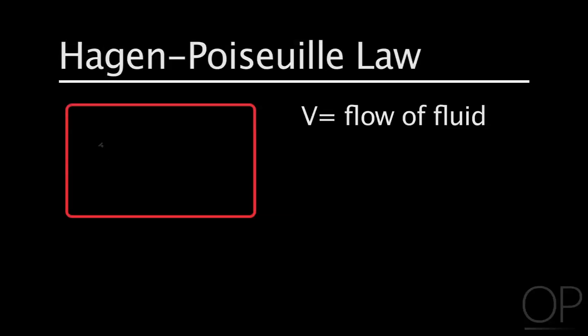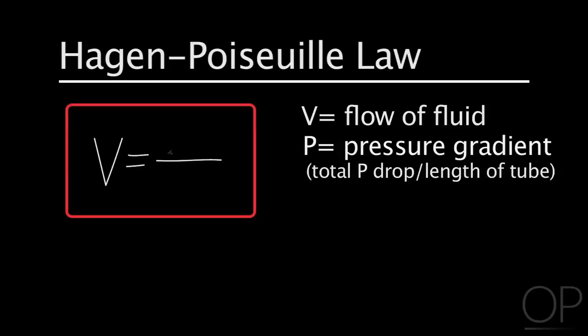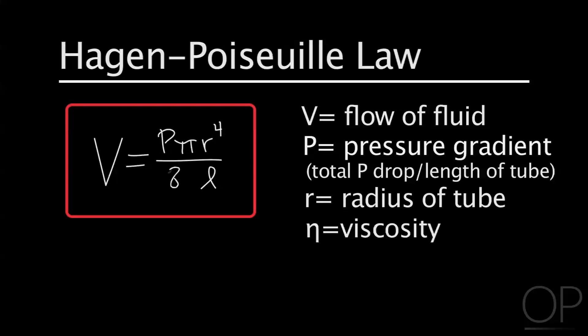The flow of this fluid through the tube is proportional to the pressure gradient, the total pressure drop over the length of the tube, the fourth power of the radius of the tube, and inversely proportional to the viscosity of the fluid. This relationship is the Hagen-Poiseuille law.